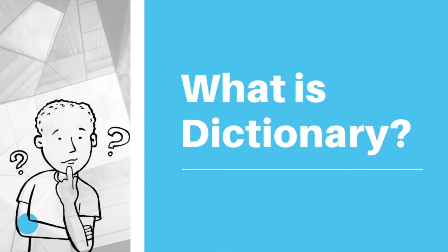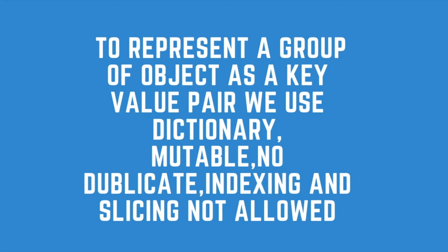First question: what is a dictionary? To represent a group of objects as key-value pairs, we use a dictionary. It is mutable, meaning we can change the value. There are no duplicate values allowed, and indexing and slicing are not allowed in a dictionary.